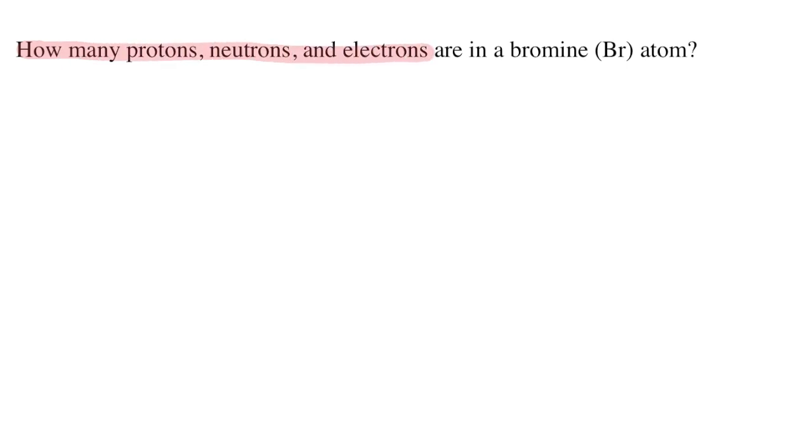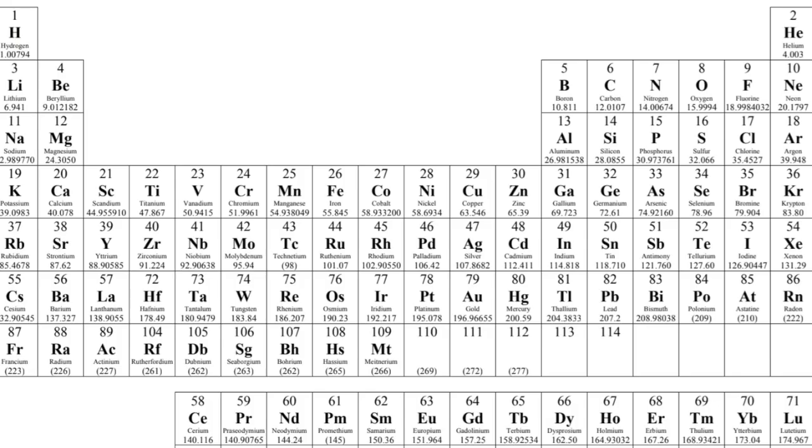To solve this problem all we need is a periodic table. We'll find all the information that we need by looking at bromine's square on the periodic table. Bromine has the symbol Br. It's right here.